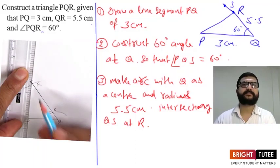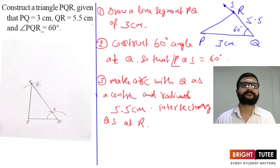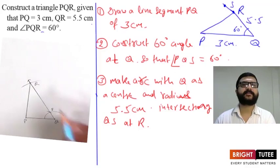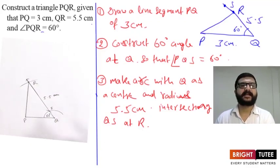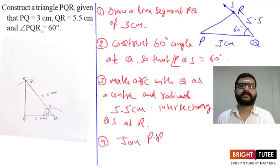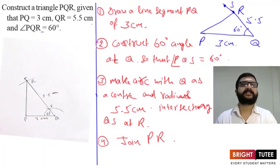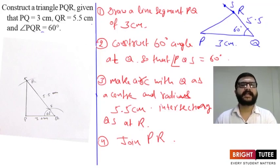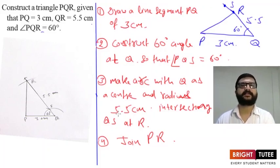The next step is to join R and P. Now we are ready with triangle PQR in which QR is 5.5 centimeters, PQ is 3 centimeters, and angle PQR is 60 degrees. The last step of construction is: join PR. This is how we construct a triangle when two sides and the included angle are given, and we must write the steps of construction for every question in this same way.